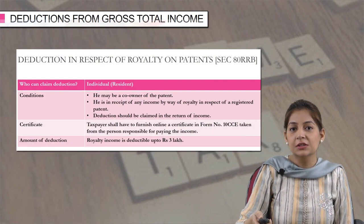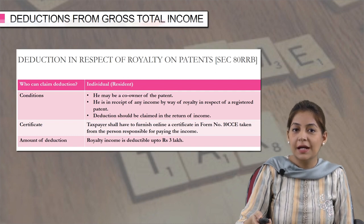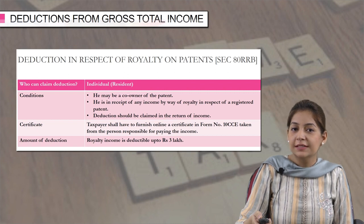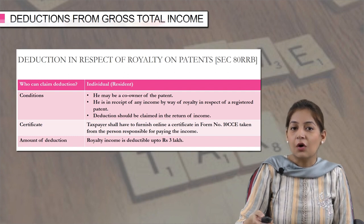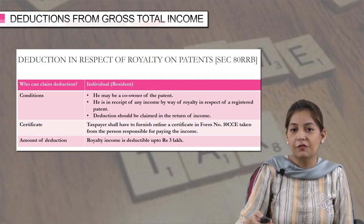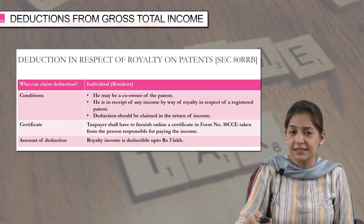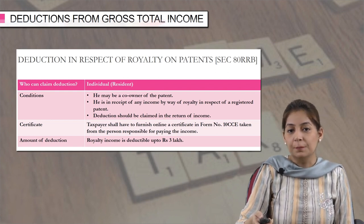Next, we have a deduction in respect of royalty on patents, that is section 80RRB. Here again, the deduction can be claimed by a resident individual only. He may be a co-owner of the patent. He must be in receipt of income by way of royalty in respect of a registered patent. The deduction should be claimed while filing his return of income, and he is also required to furnish a certificate in form number 10CCE from the person from whom he is receiving the royalty. Here again, the amount of deduction is up to rupees 3 lakh.